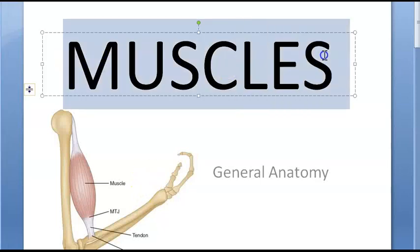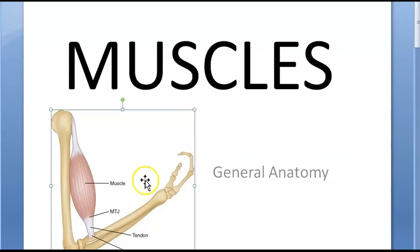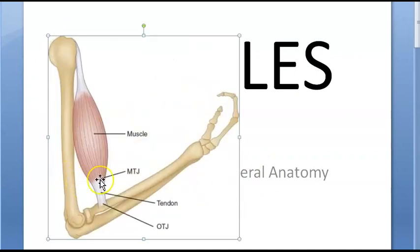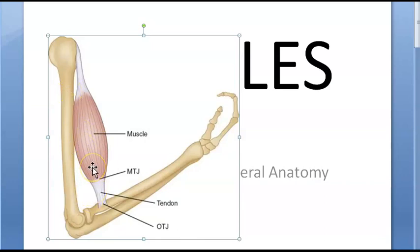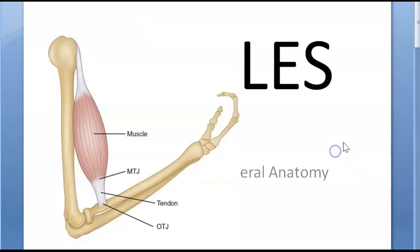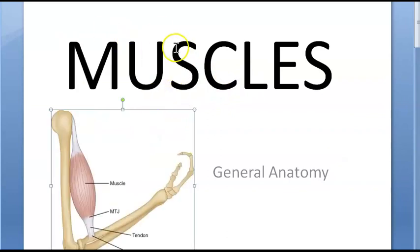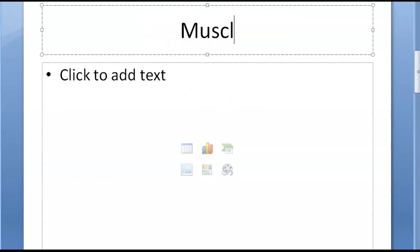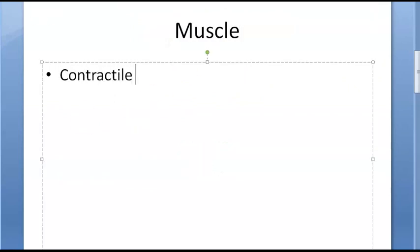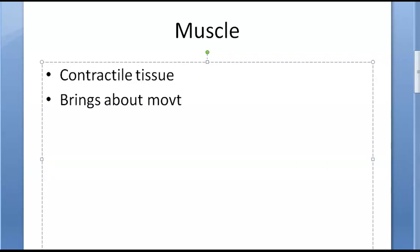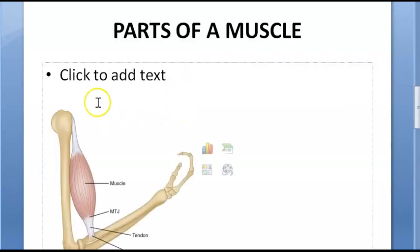Hello, in this video we want to look at the general anatomy topic: muscle. The word 'muscle' comes from the word 'mouse' because it has a tail-like structure — the tendon is called the tail. Muscle is a contractile tissue that brings about movement. They are regarded as the motors of the body.